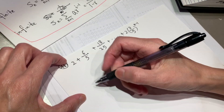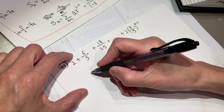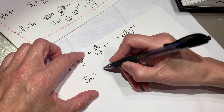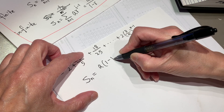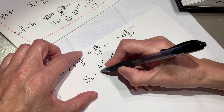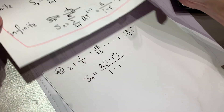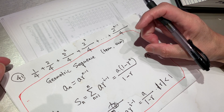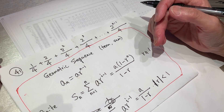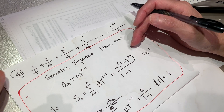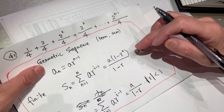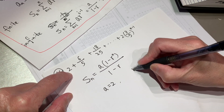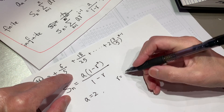So it becomes very much easier to solve the problem. S_n equals a times 1 minus r to the power of n, over 1 minus r. There are complicated ways to prove this theory, but we are just doing the homework for the teacher — we do not need to prove that method. Just copy this method. Okay, we know a equals 2 and r equals 3 over 5.